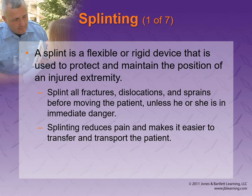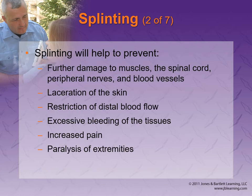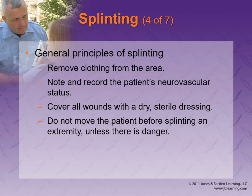Splinting — we want to splint anything that is dislocated or fractured because excess movement will make things worse. After doing the ABCs, life threats, and establishing our general impression, one of the priorities is splinting those injuries. It prevents further movement. If the bone is fractured it might actually be cutting off circulation, so you can fix that and then splint it. We want to remove clothing from the area so we can really see what we're doing and ensure clothing isn't interfering with the splint.